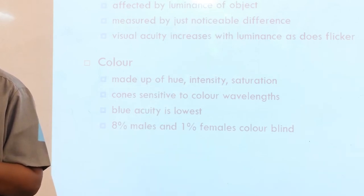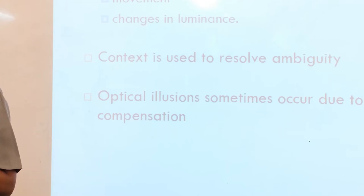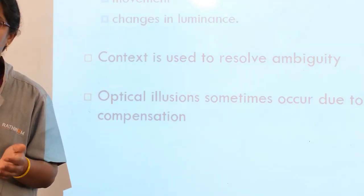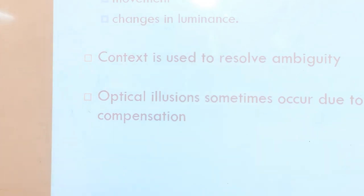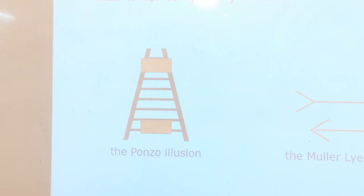Then next one is hearing. We have seen brightness and color for eye. Now we are going to discuss how hearing occurs.